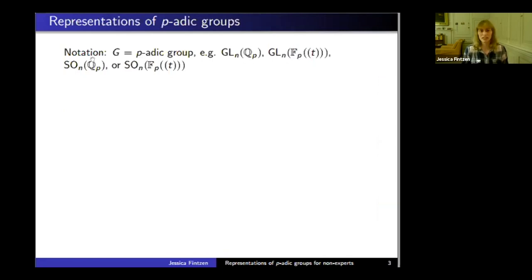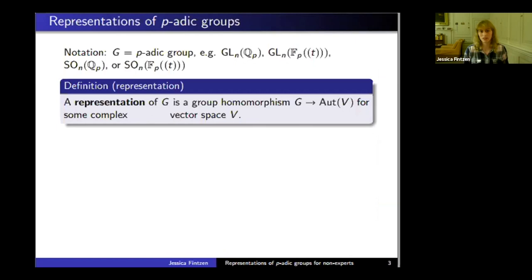We should move on to representation theory. From now on, G is a p-adic group. Let me remind you that a representation of a group is a group homomorphism from this group into the automorphisms of a vector space V.